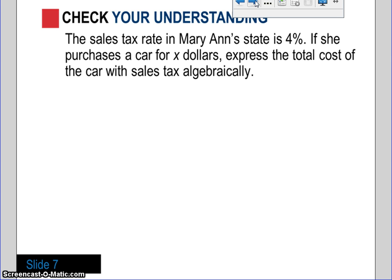Alright. It says the sales tax rate on Mary Ann's state is 4%. She purchases a car for X dollars. Express the total cost of the car. So, it's not just asking about the sales tax. It's asking about the total cost. So, when you think about it, it says that the car was X dollars. So, that's going to be part of our algebraic expression. And then, in order to find the tax, we did the percentage as a decimal times that total cost. So, it would be .04X. The last step that we need to do is we need to add the cost of the car and the tax together. And, there's our algebraic expression.